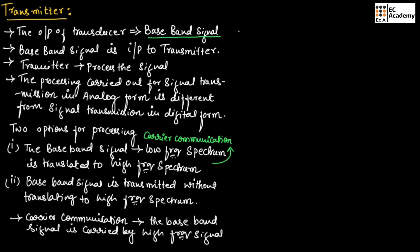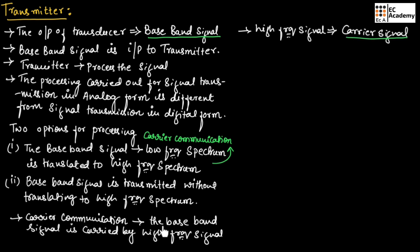This high frequency signal is known as the carrier signal. In the second option of processing, the baseband signal is transmitted without translating to the high frequency spectrum. Such type of communication is known as baseband communication.